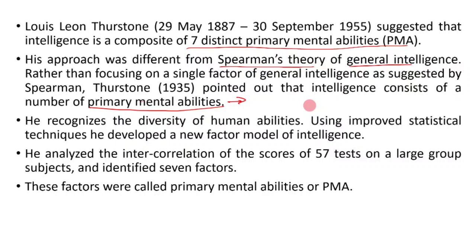The general intelligence theory depends on a general factor, but Thurston criticized this and said that intelligence is not one factor. It is made up of seven factors.